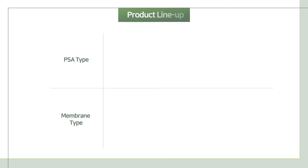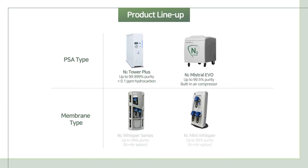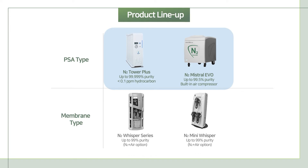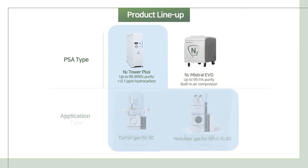Young and Chromass provides various nitrogen generators depending on generation type for proper use. There are two models of PSA type generators: Tower Plus and Mistral Evo. You can choose nitrogen generators based on productivity or purity for your application. Tower Plus's nitrogen purity is up to 99.999%, and it is used for applications such as carrier gas for GC or ELSD for HPLC.